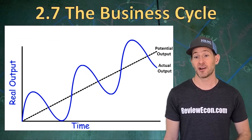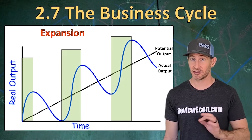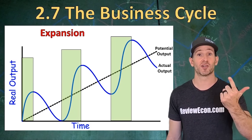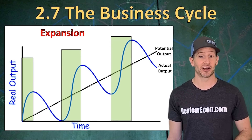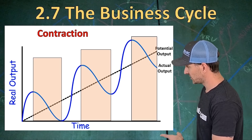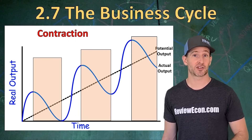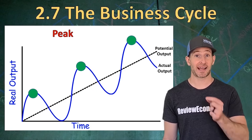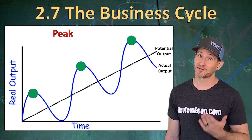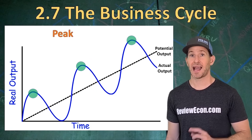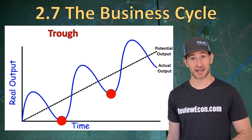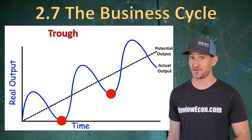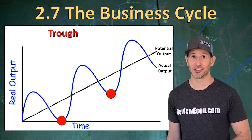There are several areas of the business cycle you need to know. Expansions are times when the economy is on the increase — GDP is rising and unemployment is falling. When the economy declines, GDP is falling and unemployment is rising; we call that a contraction. If it lasts more than six months, it's often called a recession. The peaks are the high points, where unemployment is low but inflation is often high. At the low points, called troughs, unemployment is high and inflation is often low — we may even have deflation, meaning falling prices, which is not a good thing.